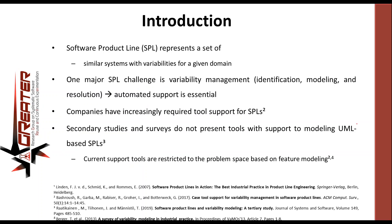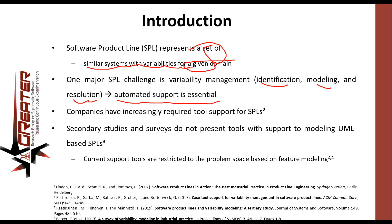Software product line is a very good approach for reuse of software and it represents a set of similar systems with variabilities for a given domain or a specific market segment. One of the major SPL challenges is still variability management in terms of identification, modeling, and resolution of variabilities, especially during the derivation of SPL specific products. To do this we hardly need automated support for SPLs.